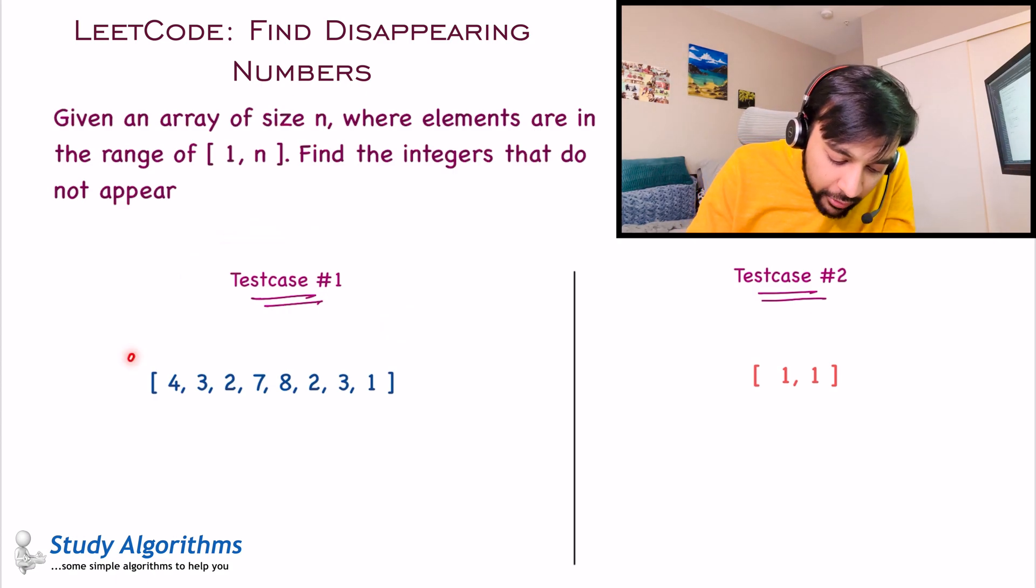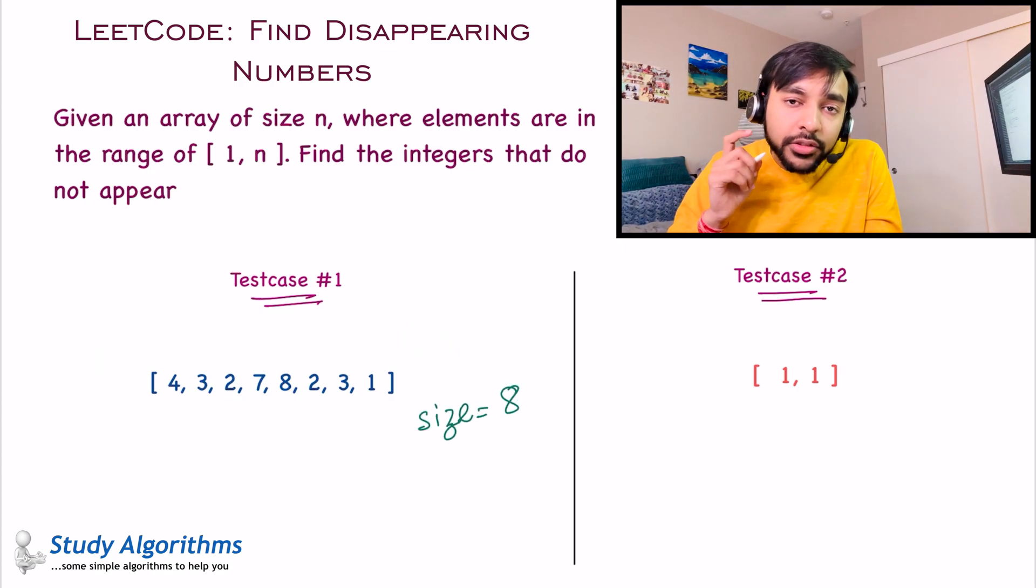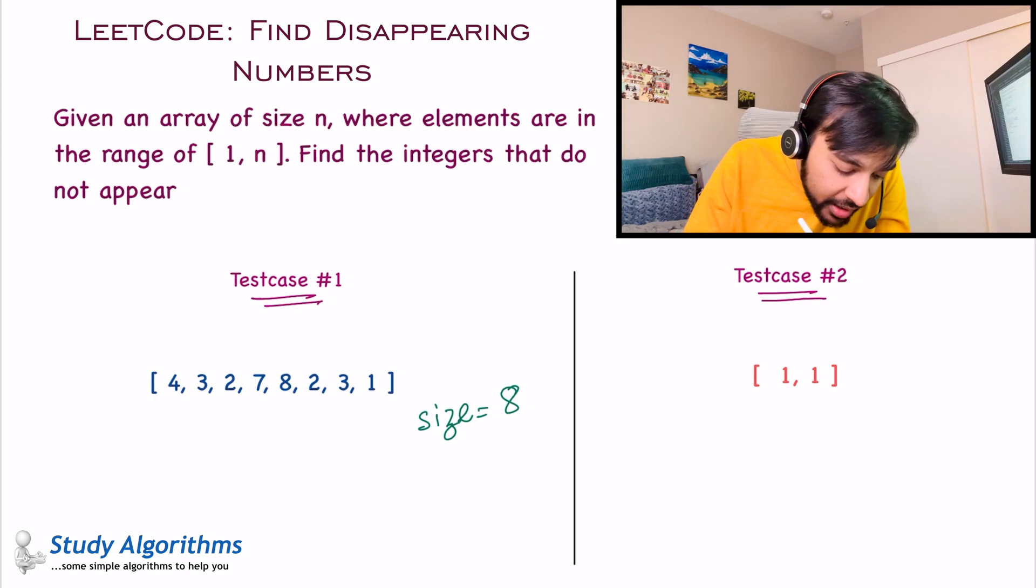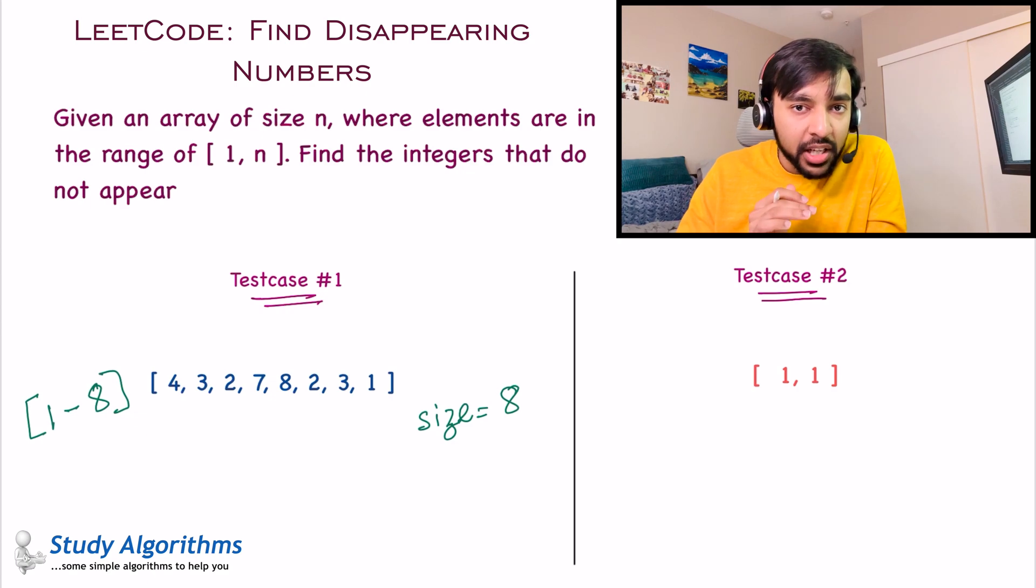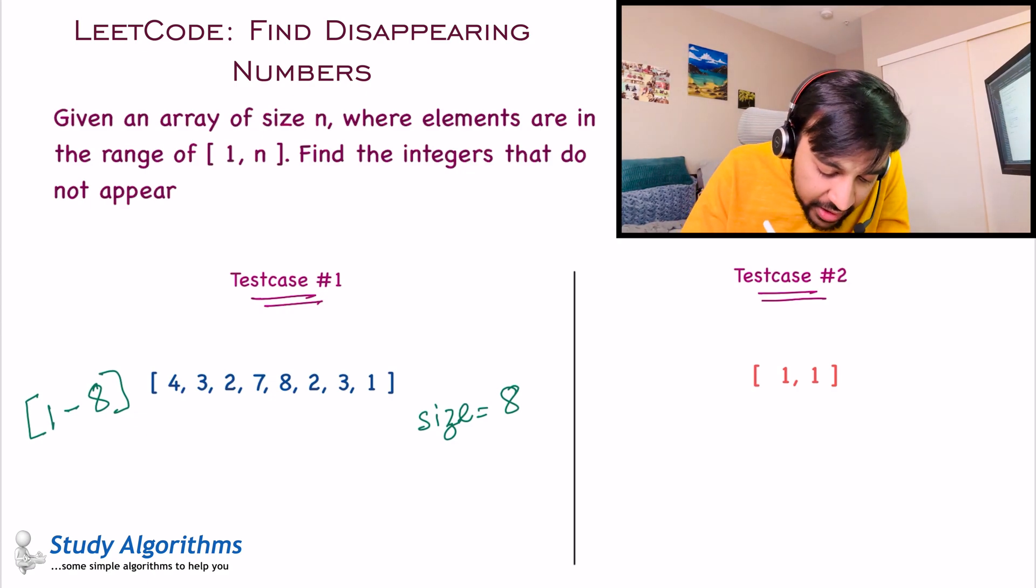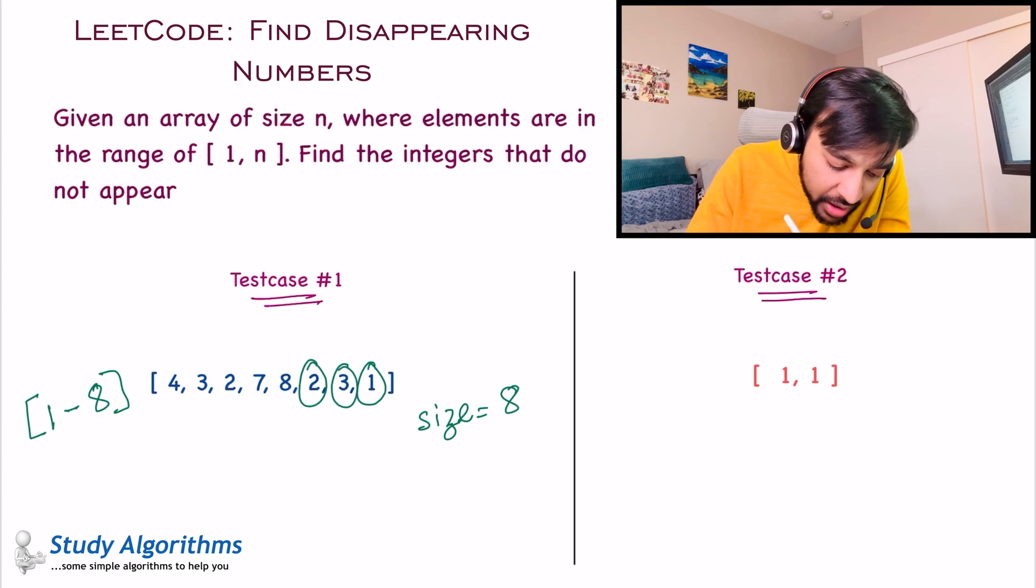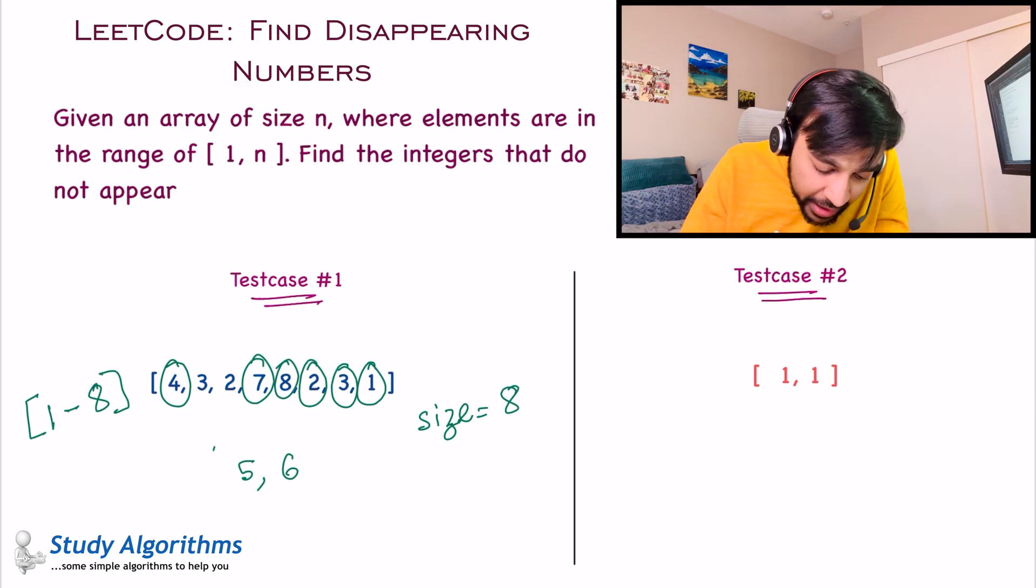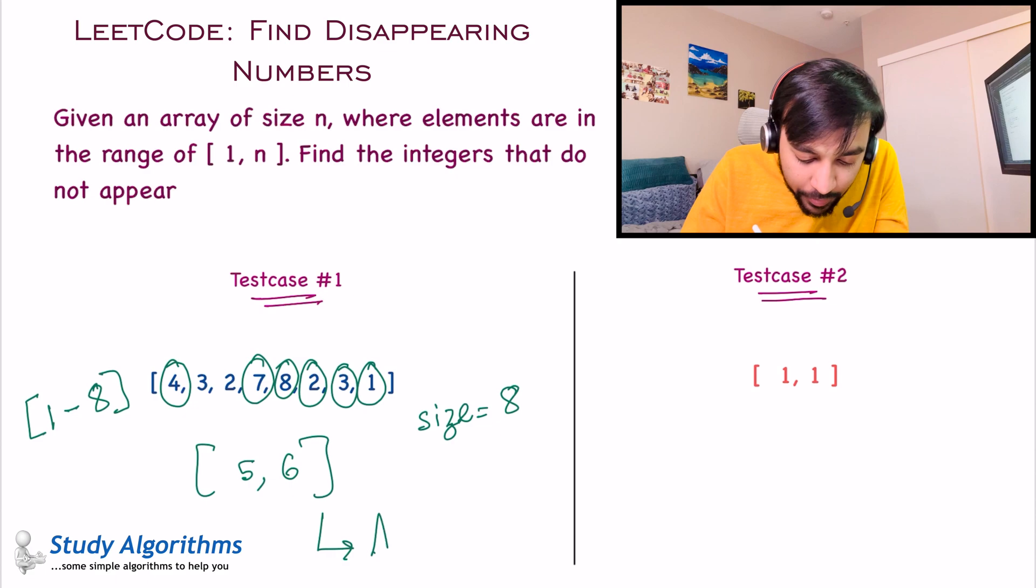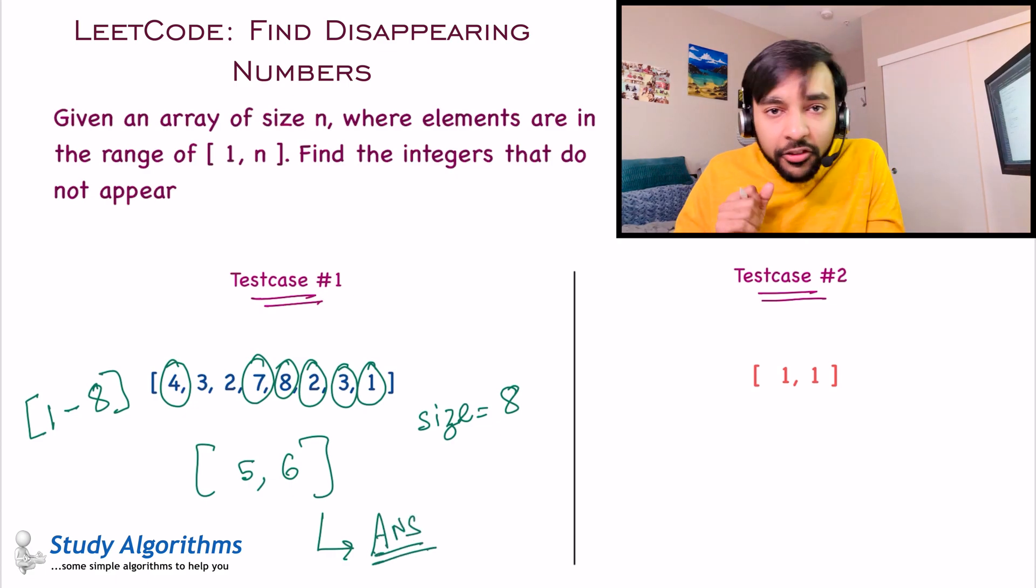In test case number 1, we are given with this array and the size of this array is 8. So according to the problem, this means that this array could have elements from 1 to 8, right? And you need to find the integers that do not appear in this array. You can see that 1 appears in the array, 2 appears, 3 appears, you can find a 4, you cannot find a 5, then you cannot find a 6, you can find a 7 and you can find an 8. So that means 5 and 6 are the disappearing numbers. And hence, this will be your answer in the first test case.